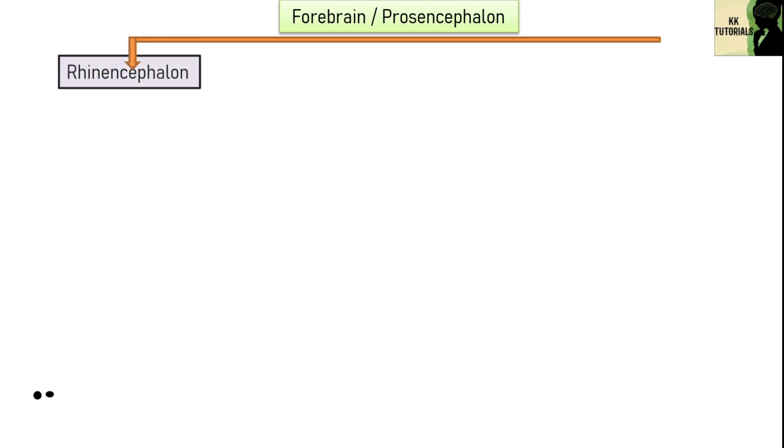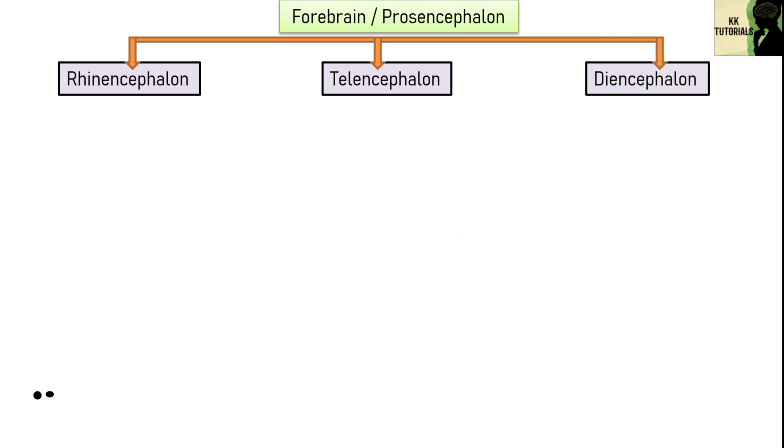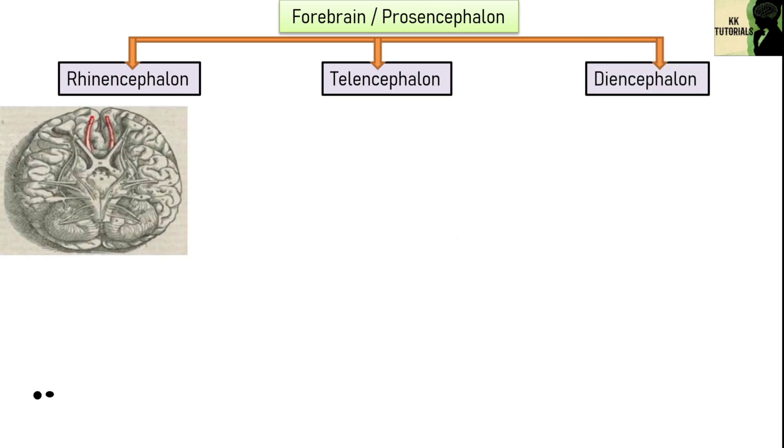Let's start with the forebrain also called as prosencephalon. It consists of renencephalon, telencephalon and diencephalon. Renencephalon consists of olfactory lobe. Olfactory lobes are highly reduced in human brain and covered by cerebrum from all sides except ventral. Each lobe consists of olfactory peduncle and olfactory bulb.